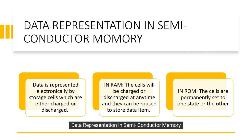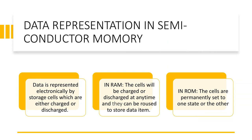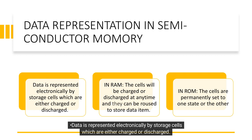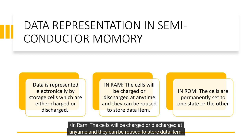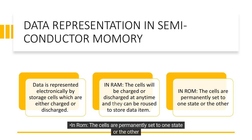Data representation in semiconductor memory: data is represented electronically by storage cells which are either charged or discharged. In RAM, the cells can be charged or discharged at any time and can be reused to store data items. In ROM, the cells are permanently set to one state or the other.